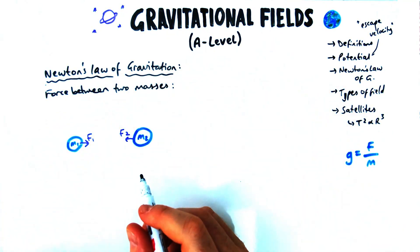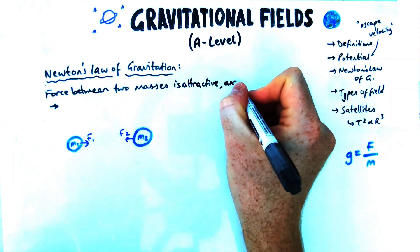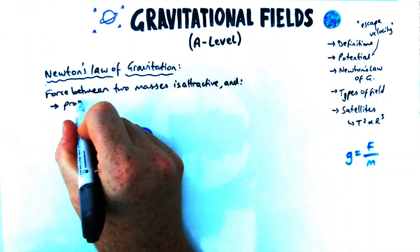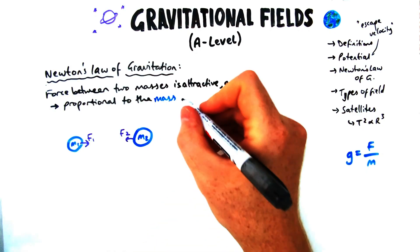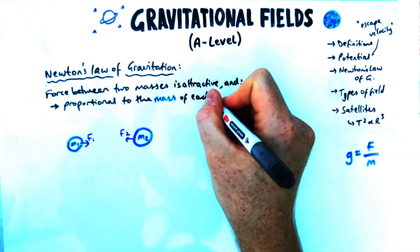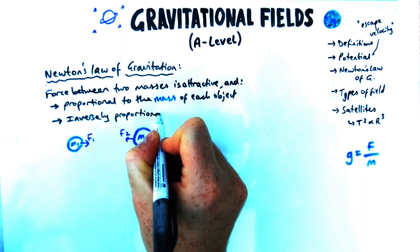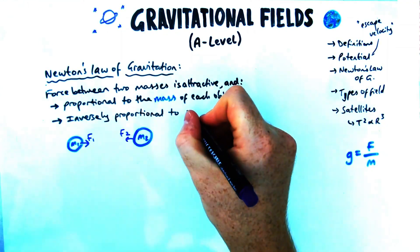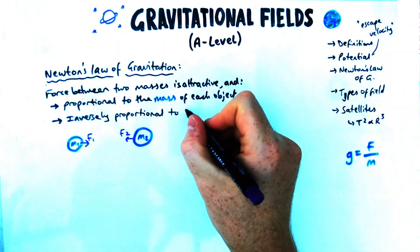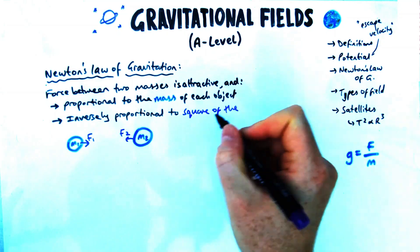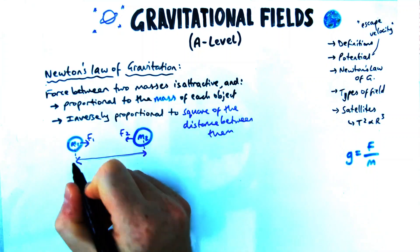First, the force is always attractive — we haven't found repulsive gravity. The forces are proportional to the masses: if you have a heavier planet you're going to have a greater force, and it's proportional to the mass of both objects. It's also inversely proportional — meaning it goes up if the distance goes down — and specifically it's inversely proportional to the square of the distance between the centres of mass, hence known as an inverse square law.